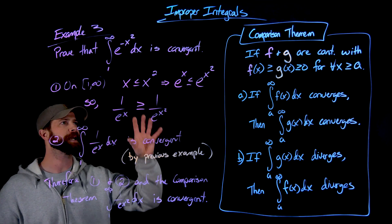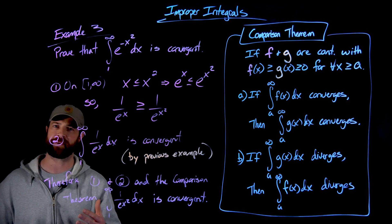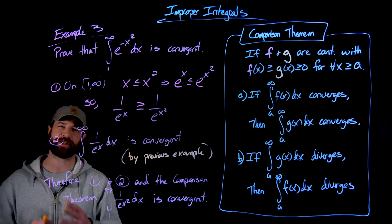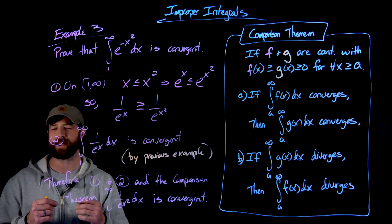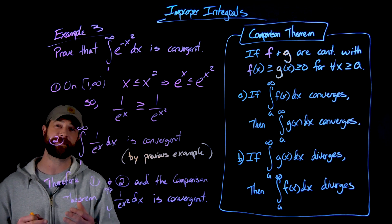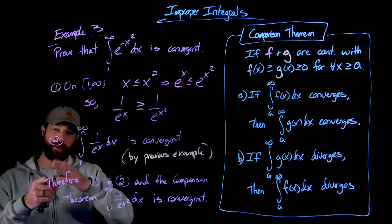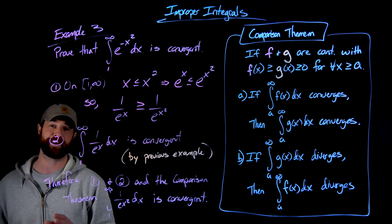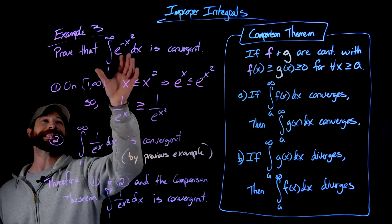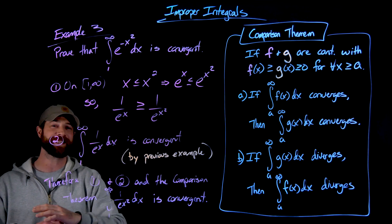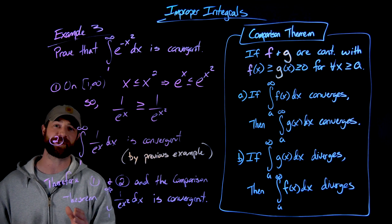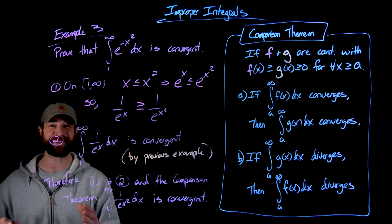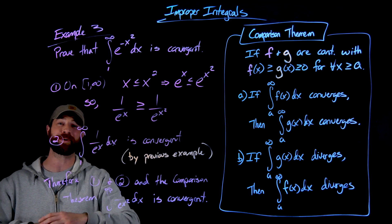As noted in previous videos, the comparison theorem is especially useful with simple rational functions of the form one over x to the p. We know that when p is less than or equal to one it diverges, and when p is greater than one it converges. So we can often take a complicated function and compare it to one of those p-series. All we've done here is state that this integral has a finite value — it is convergent — but we haven't calculated it. We're just confirming that the area under the curve from one to infinity does have a finite value.